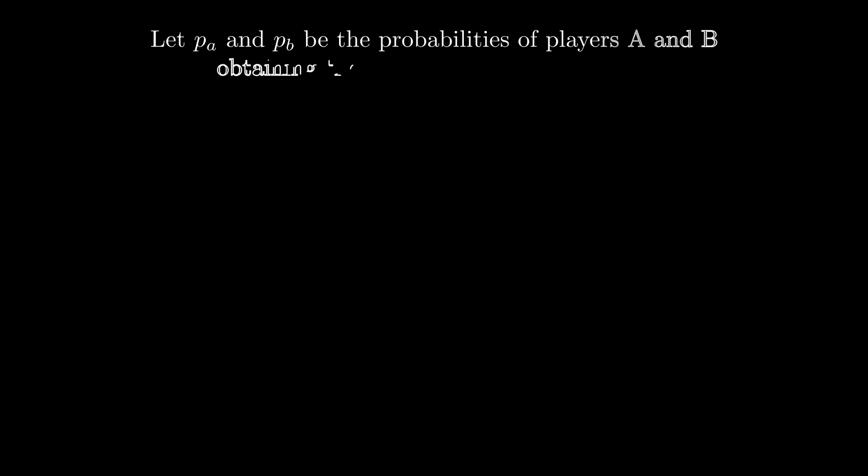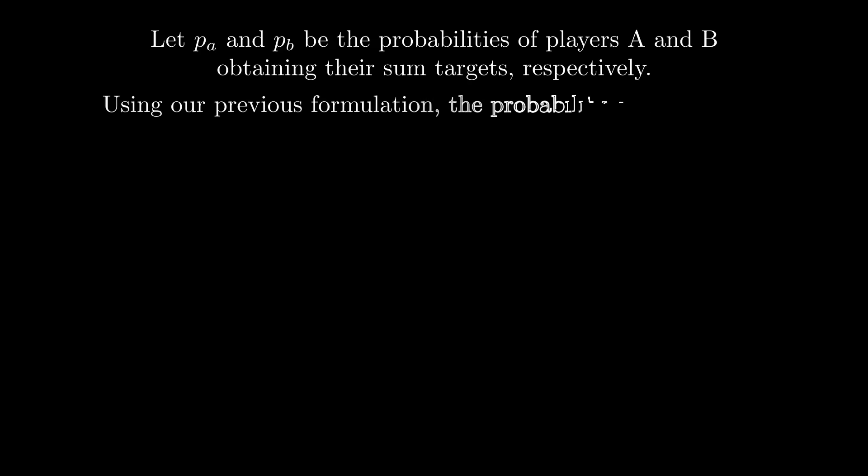To solve this problem, let PA and PB be the probabilities of players A and B obtaining their sum targets respectively. Then, we can rewrite our previous formulation with a general formula.